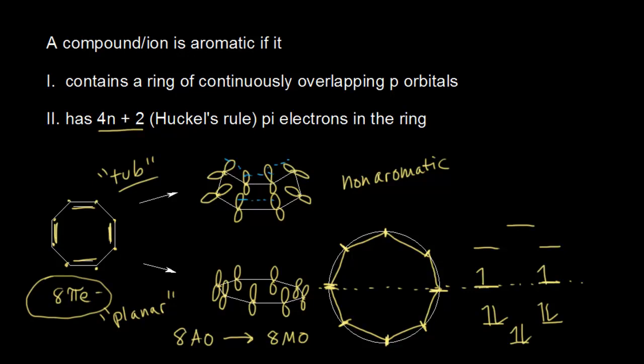Having 2 unpaired electrons predicts a very unstable molecule if it were to adopt a planar conformation. Thinking in terms of Hückel's rule, 8 pi electrons does not follow 4n+2 where n is an integer — the rule breaks down for those two electrons in the nonbonding orbitals. Because the electron count is incorrect, this molecule is definitely not going to adopt a planar conformation. So cyclooctatetraene adopts a tub conformation, not a planar one, and it is not aromatic — it is nonaromatic due to violation of the first criterion.